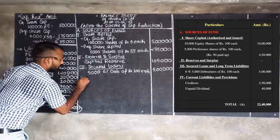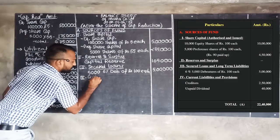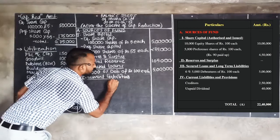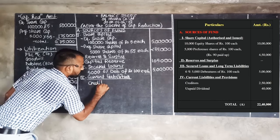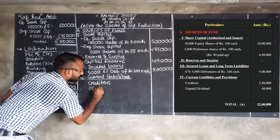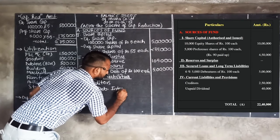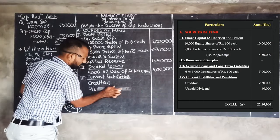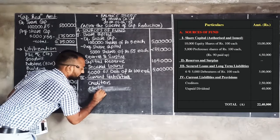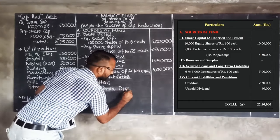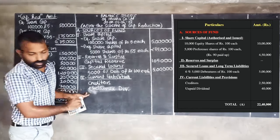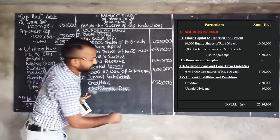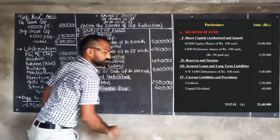Current liabilities: creditors amounting to rupees 2,50,000 and unclaimed dividend amounting to rupees 40,000. This completes the sources of fund side of the revised balance sheet.